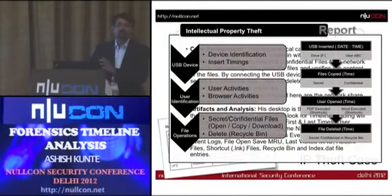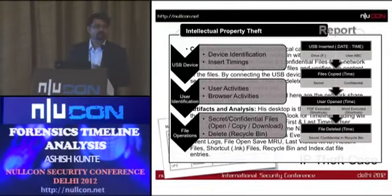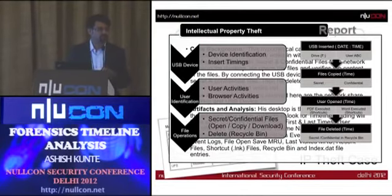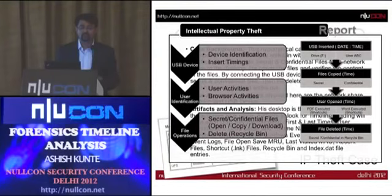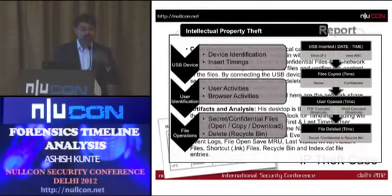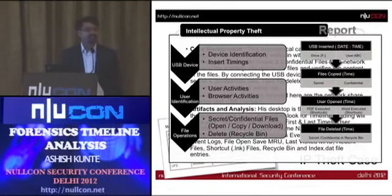As we've seen, in the USB intellectual property theft case, there were three anchor points: USB device, user identification, and file operations. Using the timeline, the report can give exact information about: USB inserted at what time and date, what was the drive letter, who was the user, and then the file operations — file opened, file copied, file deleted, and the associated shortcuts.